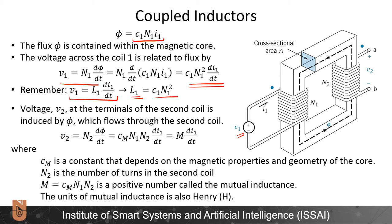Voltage V2 at the terminals of the second coil is induced by the same magnetic flux. V2 equals N2 times d-phi over dt, which equals Cm times N1 times N2 times dI1 over dt. The term Cm times N1 times N2 is shortened as M, the mutual inductance, where Cm is a constant depending on the magnetic properties and geometry of the core, and N2 is the number of windings of the second coil.